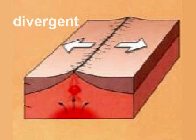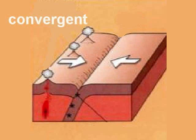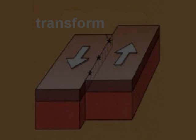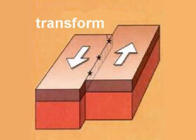Remember, in divergent, the plate boundaries are moving apart. In convergent, they are moving together, pushing into each other. In transform, the plates slide past each other in a sideways movement.